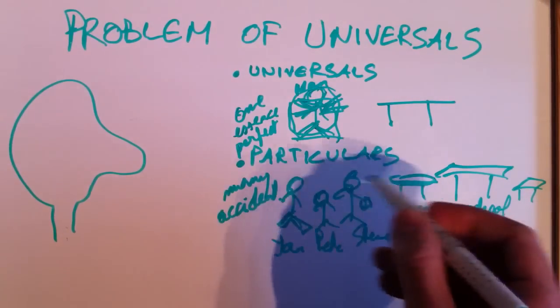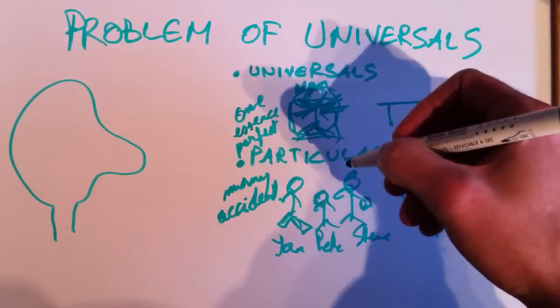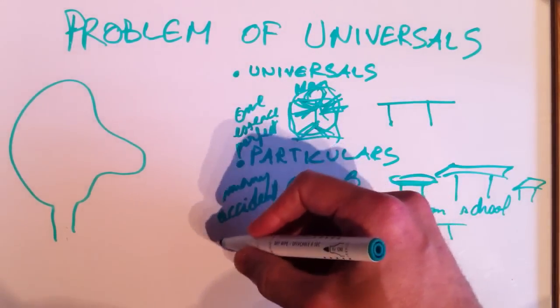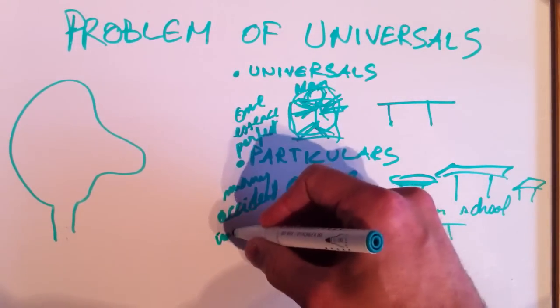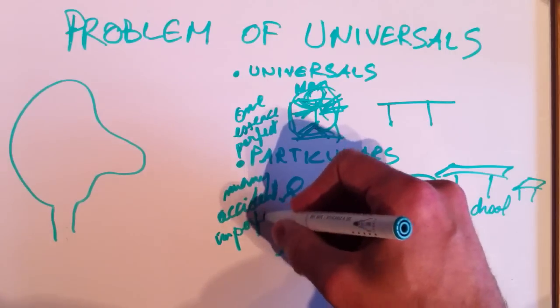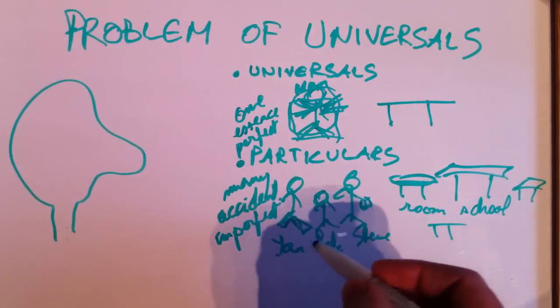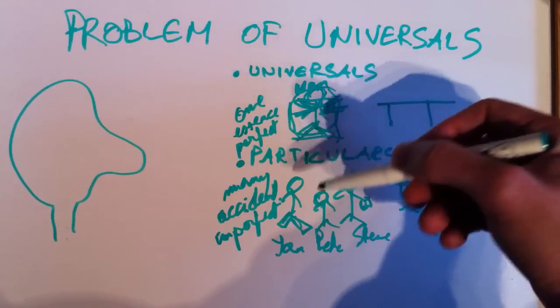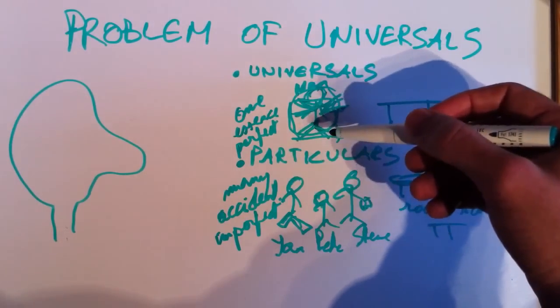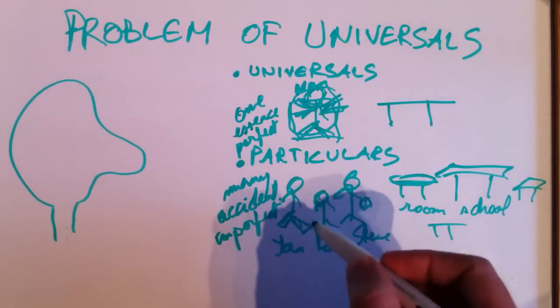While particular instances of universals, like man, are imperfect. They have accidental characteristics and not every characteristic of its universal is perfectly implemented.